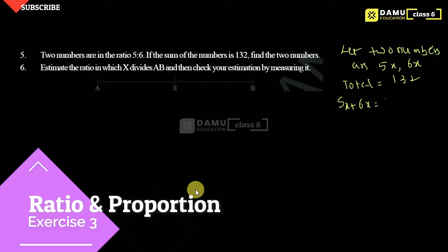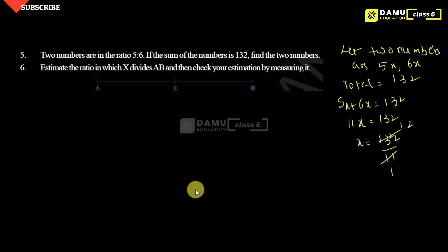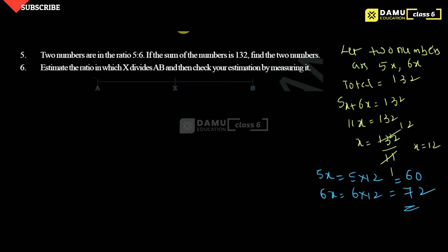Let the two numbers be 5x and 6x. Then the total will be equal to 132. So 5x plus 6x will be equal to 132. Then 11x equals 132. Then x will be equal to 132 by 11, giving x equal to 12. The first number is 5x, that is 5 into 12, which is 60. The second number is 6x, that is 6 into 12, which is 72. If you add both, you will get 132.